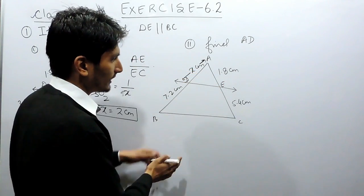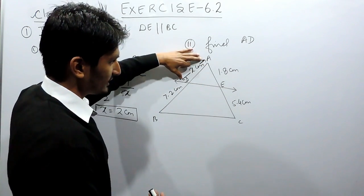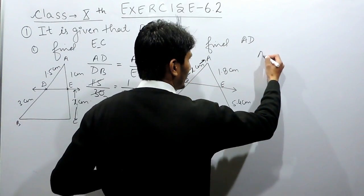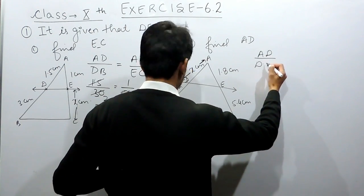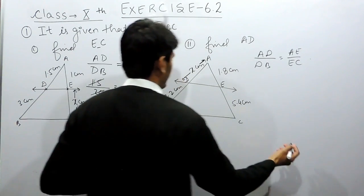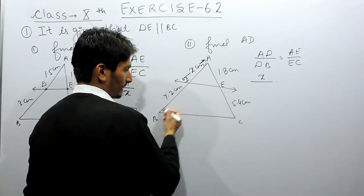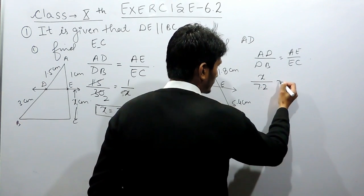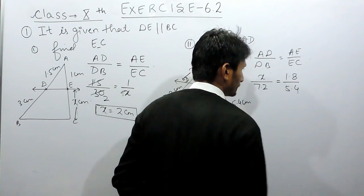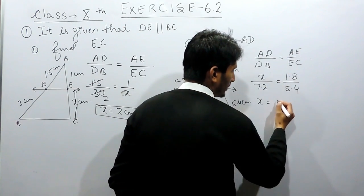Similarly, for the second case, DE is parallel to BC, so by the Basic Proportionality Theorem the ratio AD over DB must equal AE over EC. The value of AD is what we need to find, so let AD equal X. Then X over 7.2 equals 1.8 over 5.4.